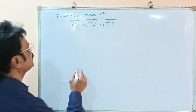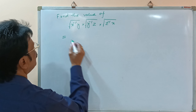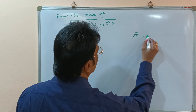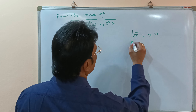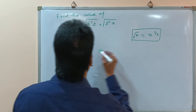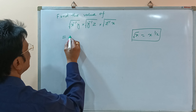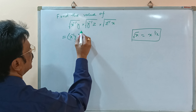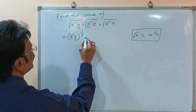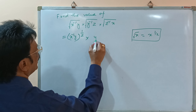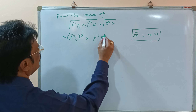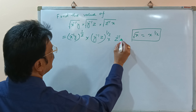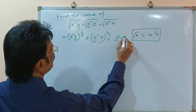We have to find out the value of this. We know that x square root over is equal to x to the power 1 by 2 — this is the formula. So we can apply this here: it is x to the power minus 1 into y whole to the power half, into y to the power minus 1 into z to the power half, into z to the power minus 1 into x whole to the power half.